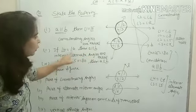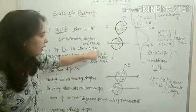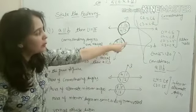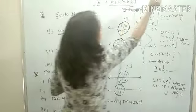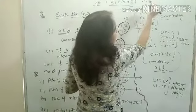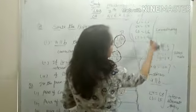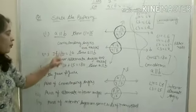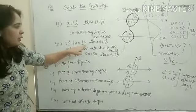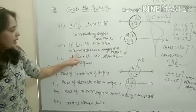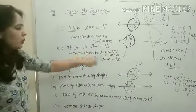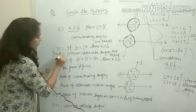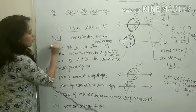अगर यह equal नहीं होते तो हम नहीं कह सकते थे कि A parallel B है। Property यह है कि A parallel B है, तो यह properties हैं। दो lines parallel होनी चाहिए और एक transverse line cut करनी चाहिए। अगर angle 4 is equal to angle 6, then A parallel to B — reason: interior alternate angles equal हैं।